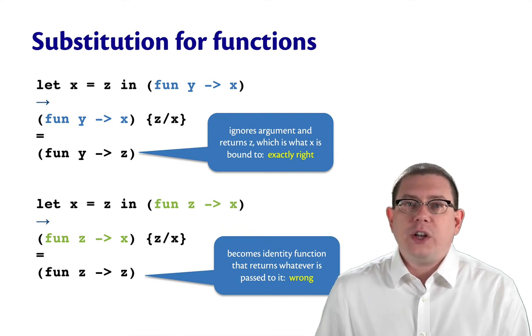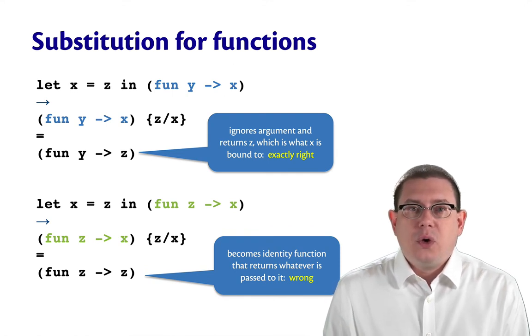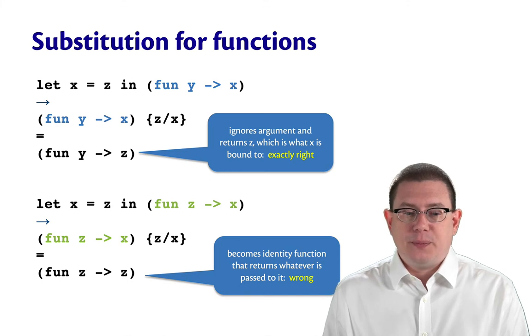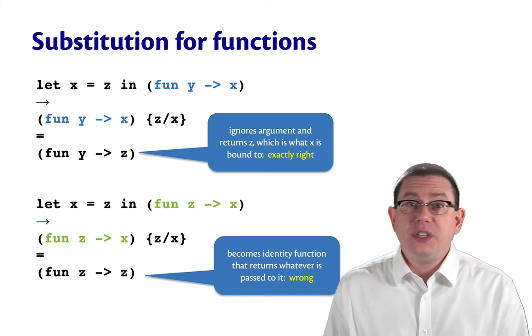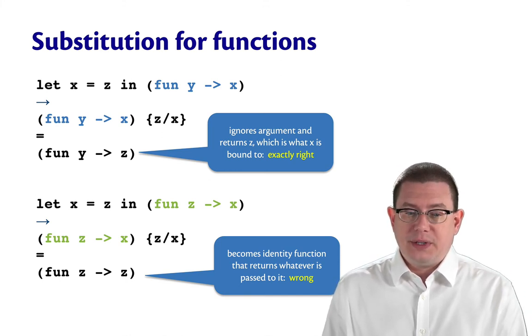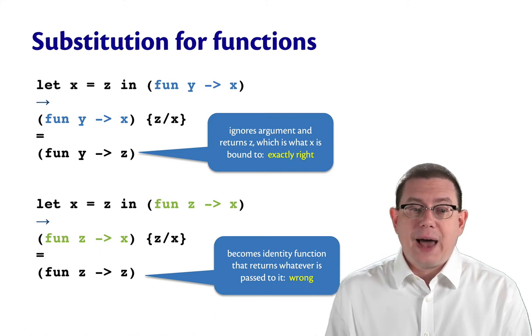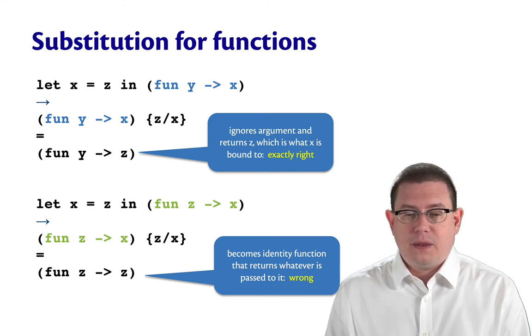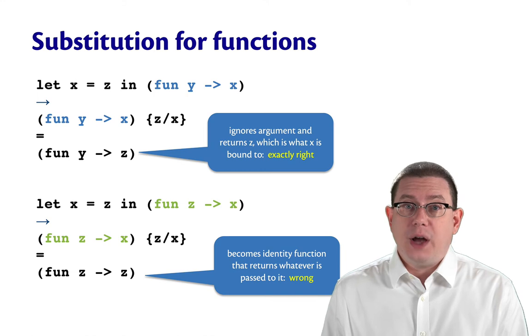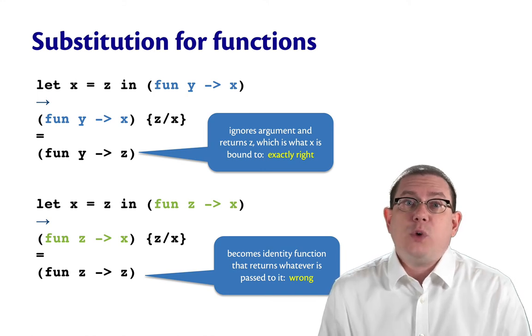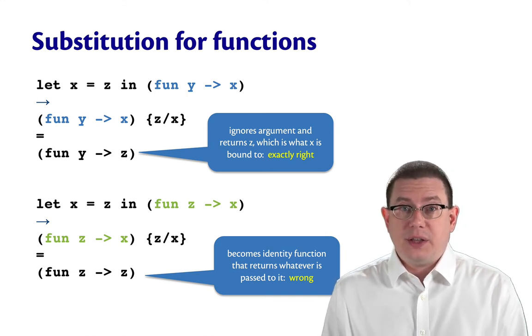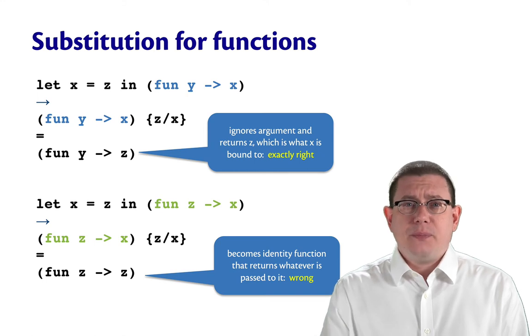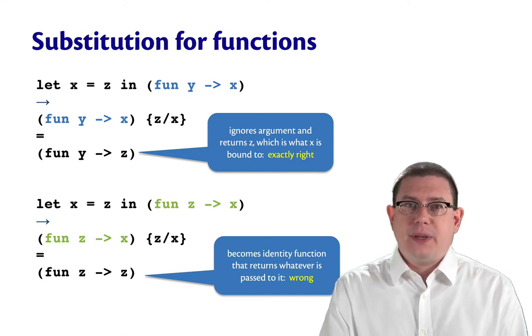But look what just happened. We got the identity function at this point. This function does not ignore its argument. It returns whatever's passed to it. So these two functions are not the same function. They will not behave the same way in all contexts. There's something broken here with our definition of substitution.